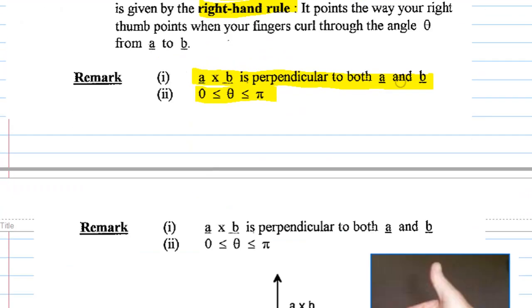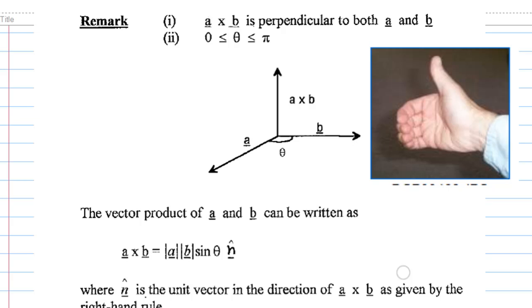Here is a picture illustration. A cross b is always perpendicular to a and b. Let me show you the illustration here. I have a vector a here and a vector b here. So when you find a cross b, you have to turn from a to b.